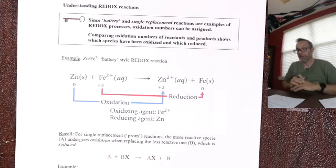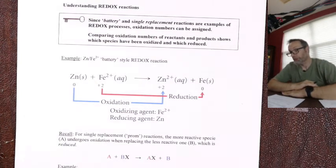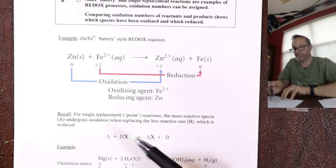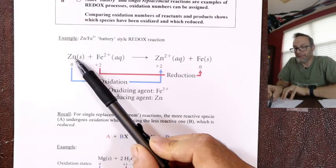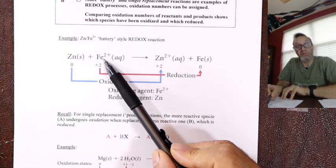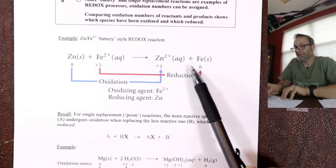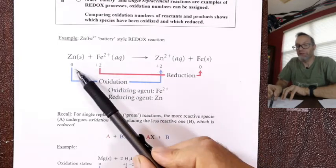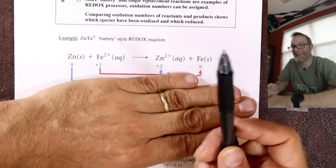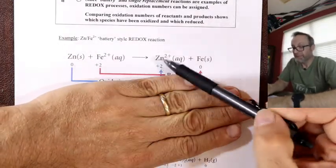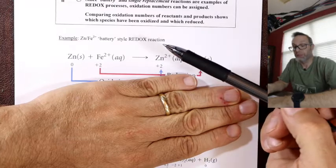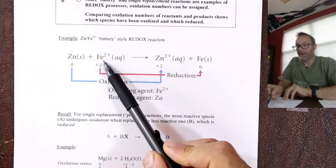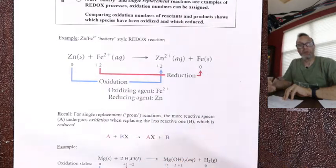All we need to know for now is who's stronger, who's weaker — and that comes back to the periodic table. For example: zinc plus iron(II) will react to make zinc two plus and iron. Zinc went from a zero to a plus two — did it lose or gain electrons? It went to plus, so it lost. Zinc was oxidized.